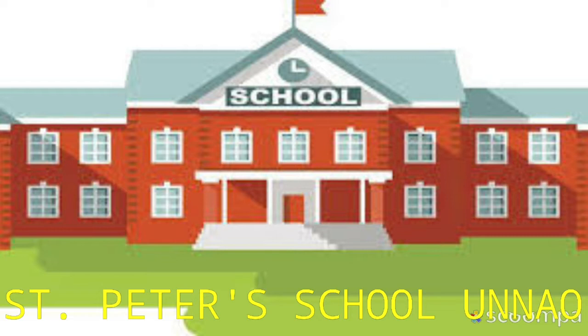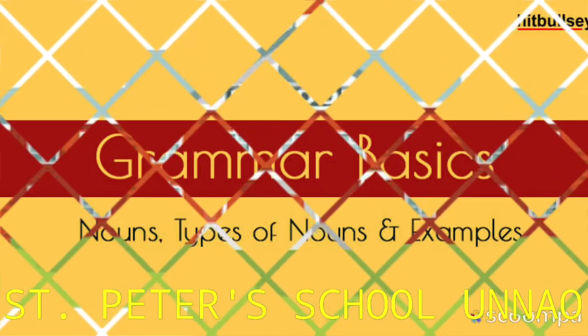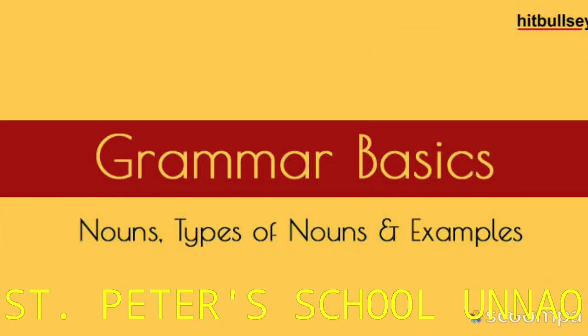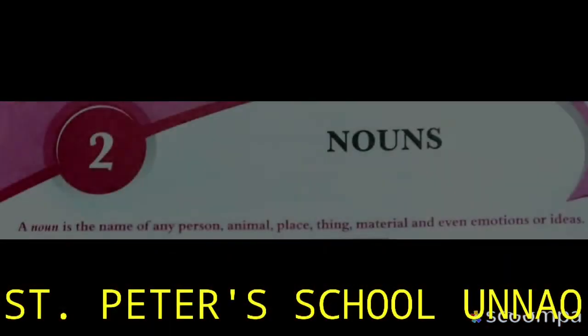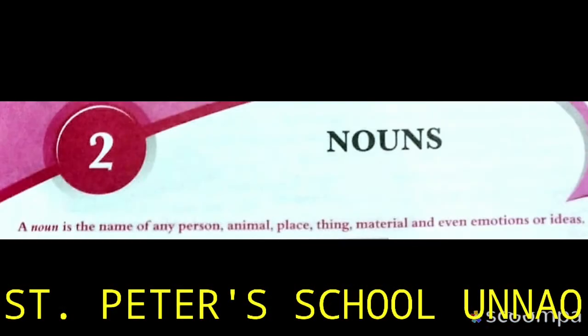I hope you understand what I mean. So let's write the simple definition and remember it. A noun is a name — the name of a person, place, material like gold, or emotions and ideas.